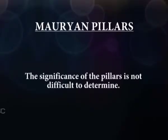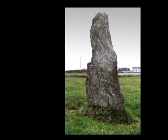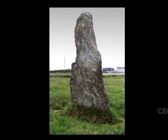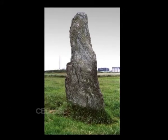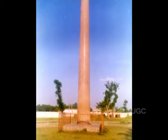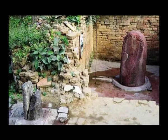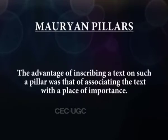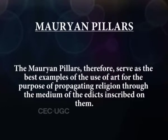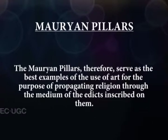The significance of the pillar is not difficult to determine. The origin of the pillar as a structure goes back to the monolith of the prehistoric period. These were generally cut from a single block of stone and stood in an enclosure which was regarded as sacred. Sometimes they were worshipped as a phallic emblem or linga. The advantage of inscribing a text on such a pillar was that of associating the text with a place of importance. The Mauryan Pillars therefore serve as the best examples of the use of art for the purpose of propagating religion through the medium of edicts inscribed on them.